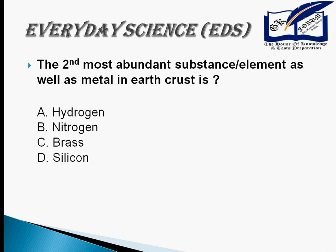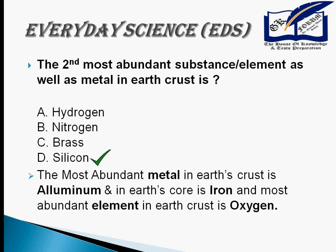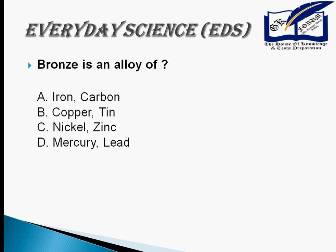The battery was invented by Alexander Volta. The second most abundant element in the earth's crust is silicon. The most abundant metal in the earth's crust is aluminum. The most abundant metal in the earth's core is iron. The most abundant element in the earth's crust is oxygen.